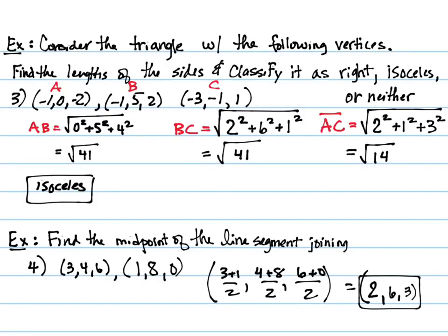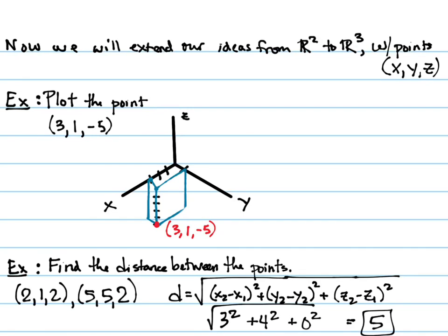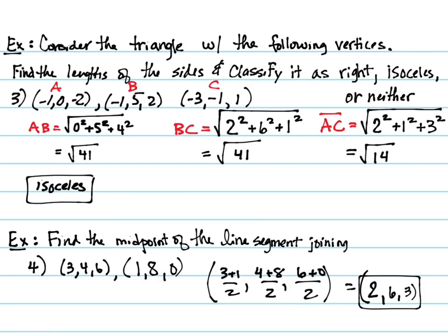We've mentioned two different formulas that are really the same formula: the distance formula and the Pythagorean theorem. Whether you've thought about them from that perspective or not, they are the same formula. A third formula exactly like those two is the equation of a circle. If you squared both sides of the distance formula, you'd get the equation of a circle — or in three dimensions, a sphere.